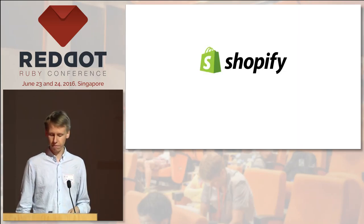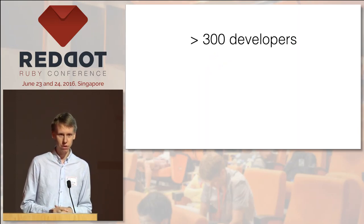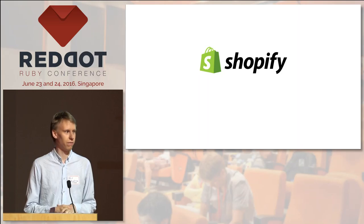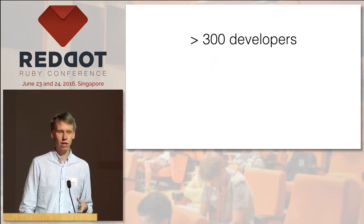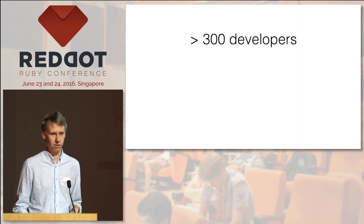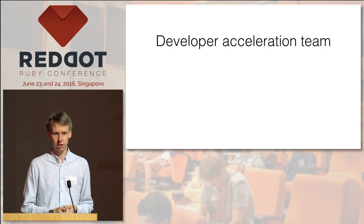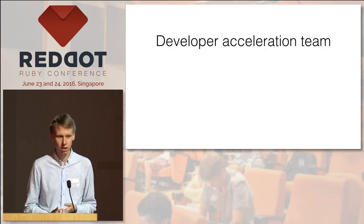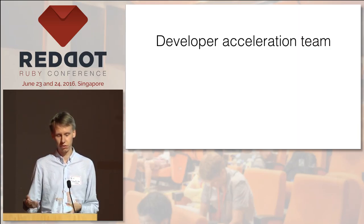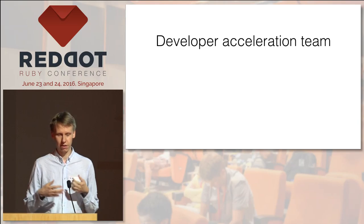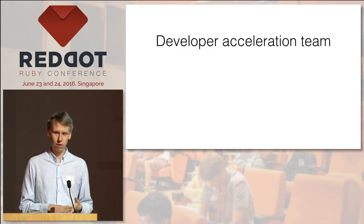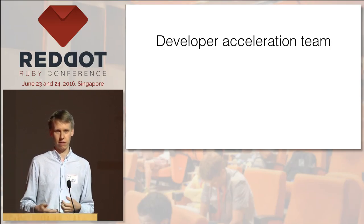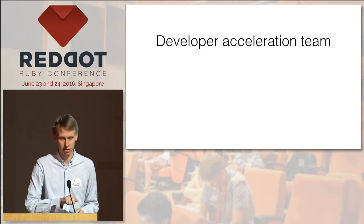A bit about Shopify: we have quite a lot of developers, more than 300. It's an e-commerce platform for small and medium businesses. When you have so many developers, you need to build tools so they can be productive. My team is called Developer Acceleration, and we build internal tools to make developer productivity better — ChatOps and automation are one of the things we work on.